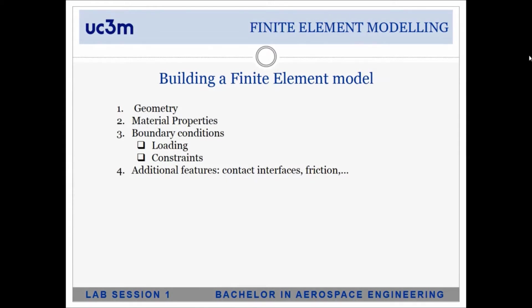To build a linear static finite element model — the type we're working with now — we first design our geometry, which defines our domain. We then define the material properties of the materials we're working with. We apply boundary conditions, loading conditions, and constraints, always ensuring they satisfy static equilibrium. For more complex scenarios, we may also use contact interfaces and friction.